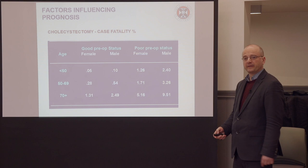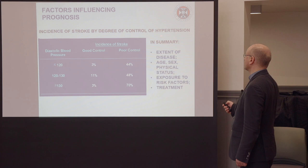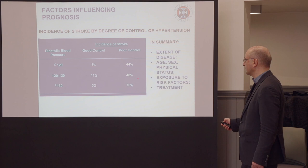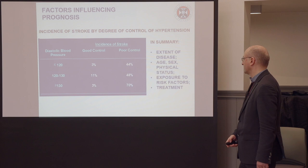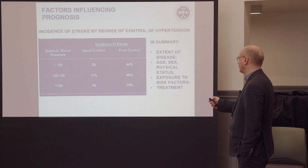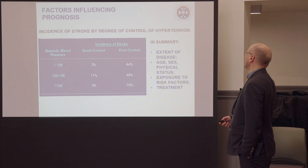And incidence of stroke by degree of control of hypertension: if you have good control versus poor control, the incidence of stroke is going to be completely different, even in people with diastolic blood pressures at a similar level. In summary, the extent of disease spread, the age, the sex, the physical status, exposure to risk factors, and treatment can all have a big impact on the prognosis of disease.